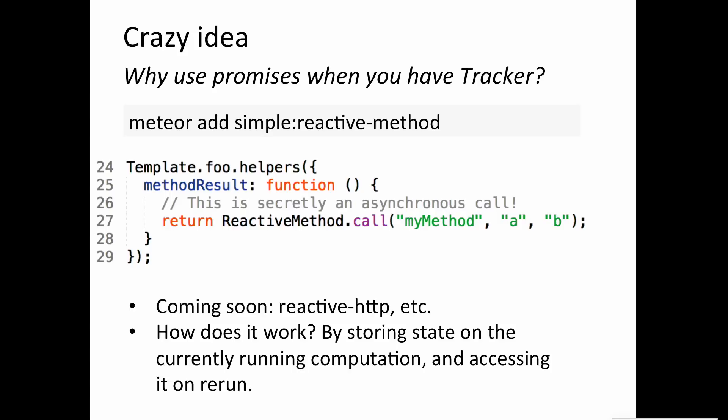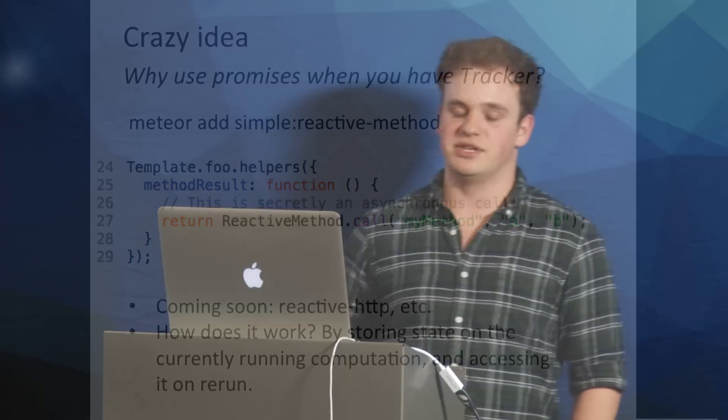In the future, I'm also hoping to build something like reactive HTTP so that you can easily have a REST API mapped onto your Blaze template without having a ton of temporary variables and callbacks and things like that. Hopefully you guys can also build some cool things with Tracker and we can get them out there. Thanks.